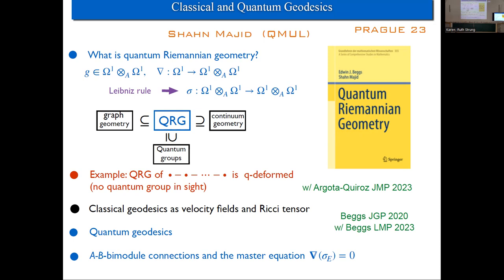Out of the Leibnitz rule for covariant derivatives we extract the natural place for a bimodule map, which we call the generalized braiding. This will be a kind of connection which admits this map, and this map has a lot of marvellous properties. Classically it's just the flip map, so you wouldn't even think of it — it wouldn't cause you to blink when you transpose tensors — but in quantum geometry that map is going to play a critical role. It can, under nice cases, obey the Yang-Baxter equations and is intimately linked with integrable systems.